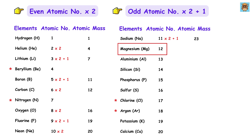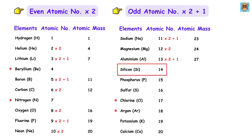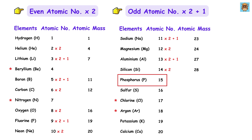Magnesium has atomic number 12, which is even, so 12 times 2 gives us 24. Aluminium has atomic number 13, which is odd, so 13 times 2 plus 1 is 26 plus 1, giving us 27. Silicon has atomic number 14, which is even, so 14 times 2 gives us 28. Phosphorus has atomic number 15, which is odd, so 15 times 2 plus 1 is 30 plus 1, making 31.